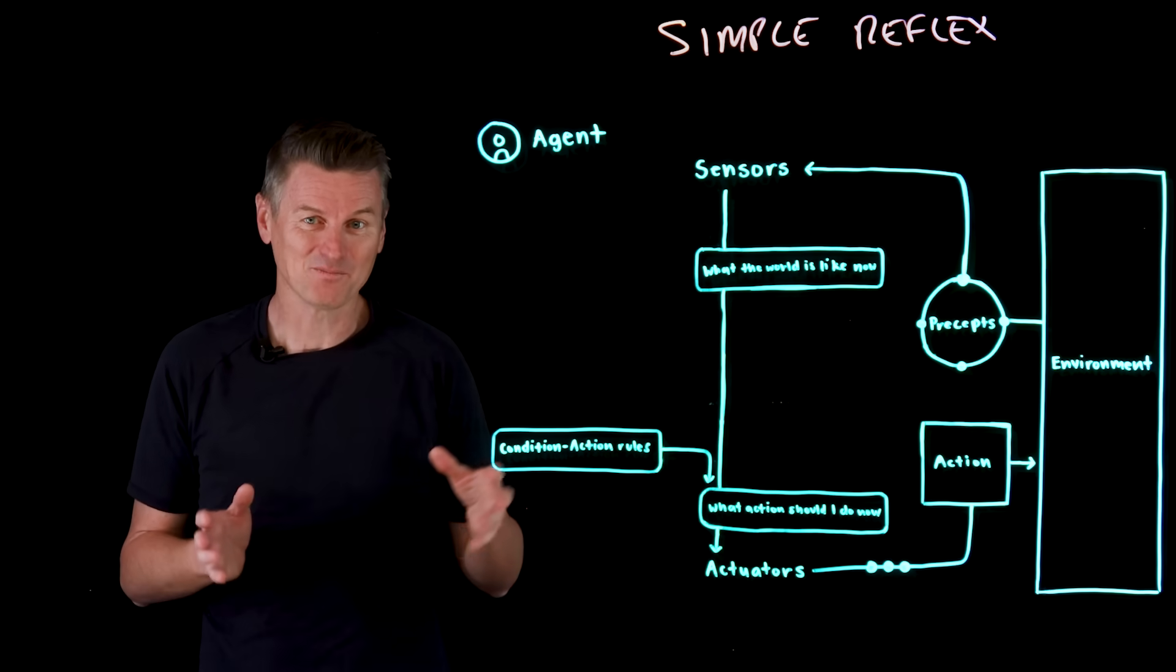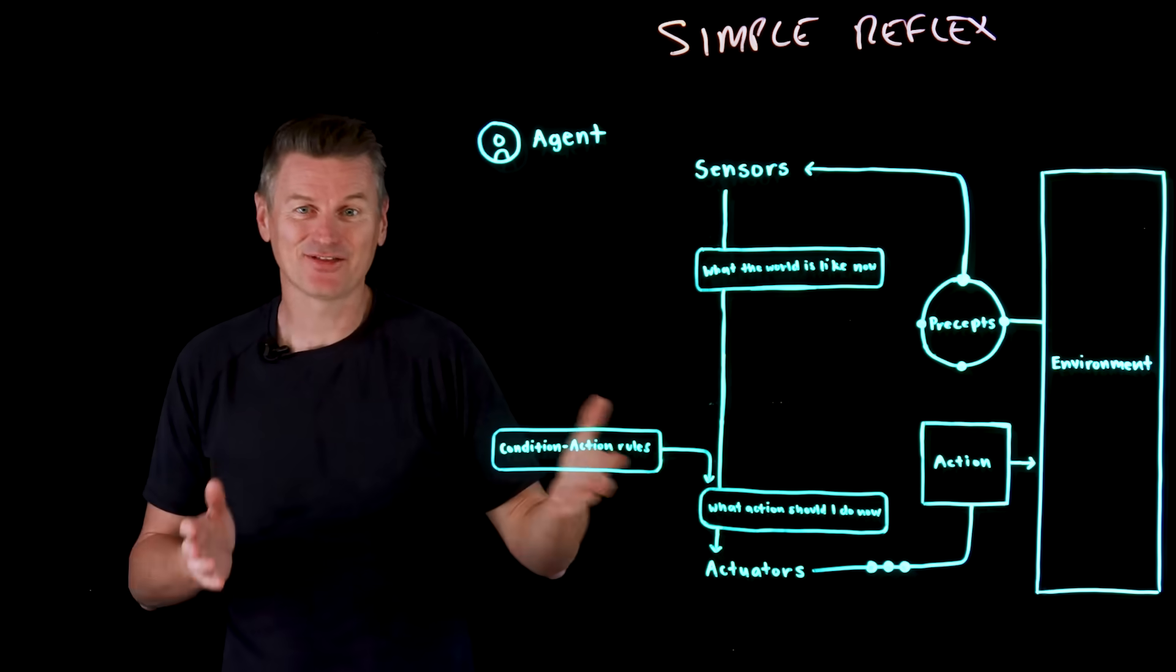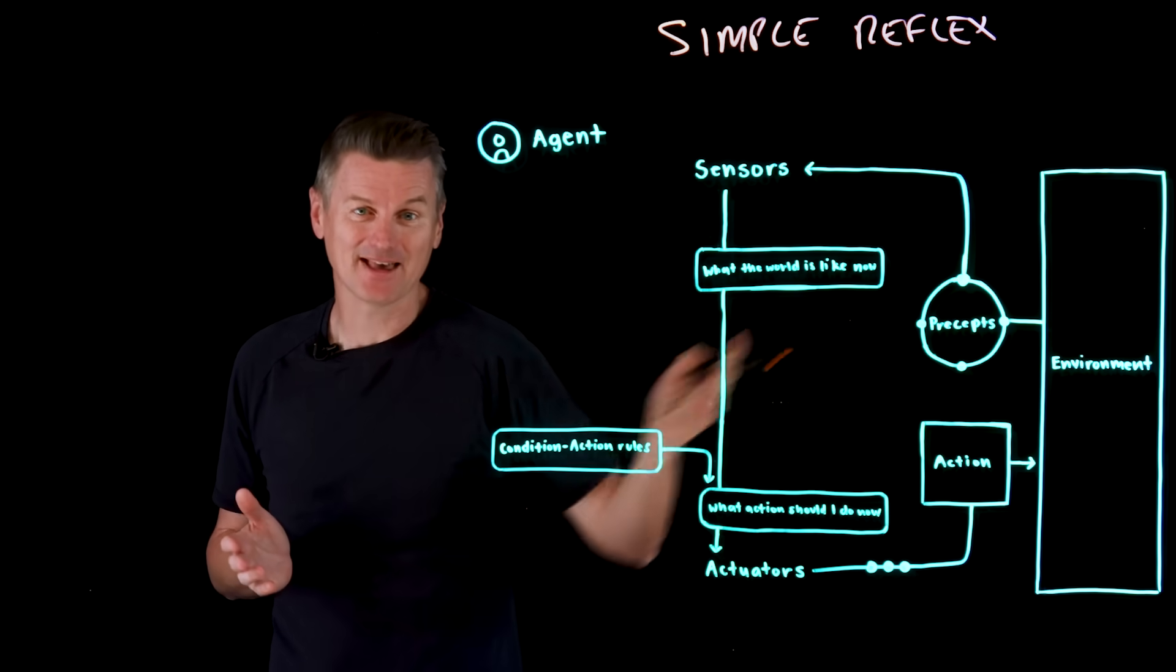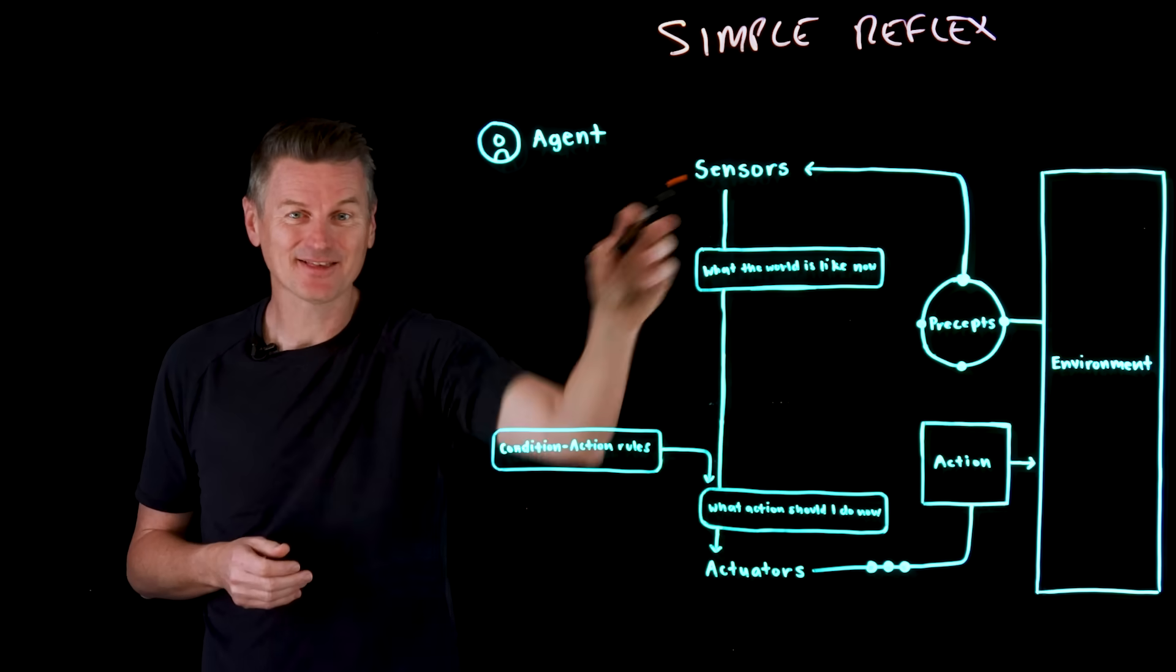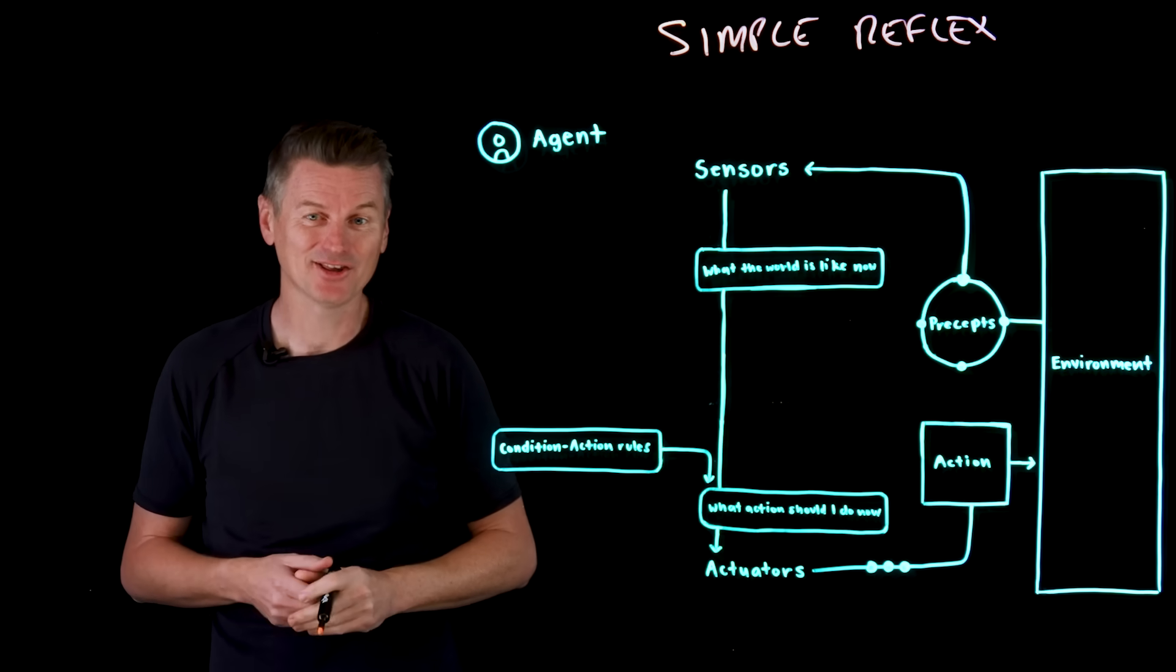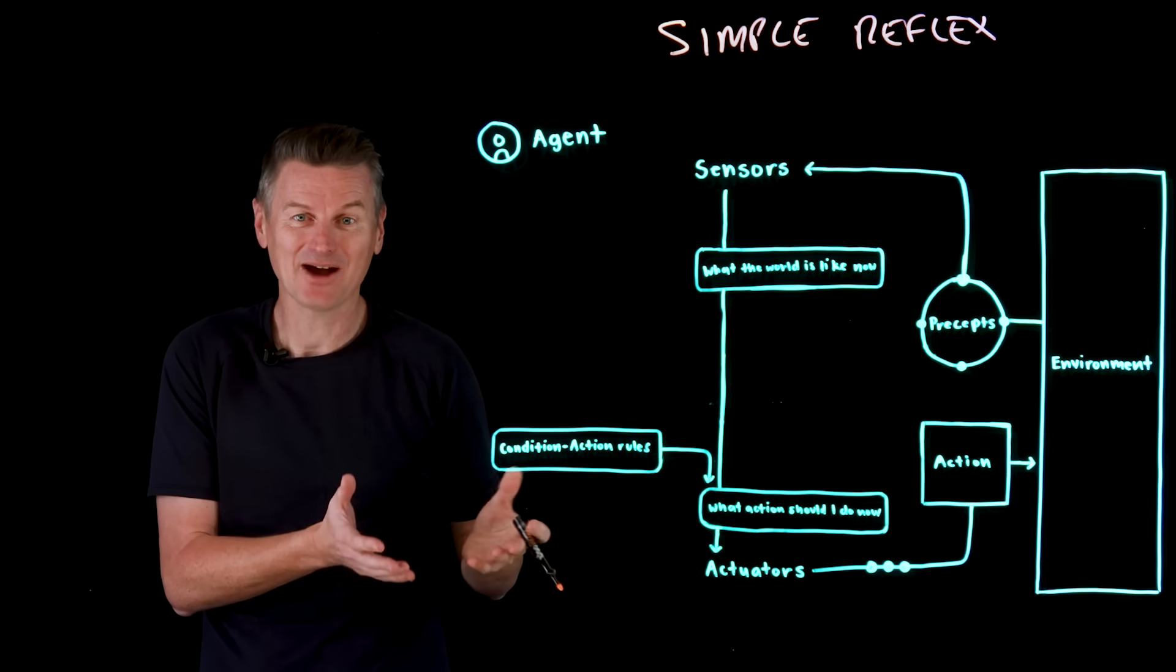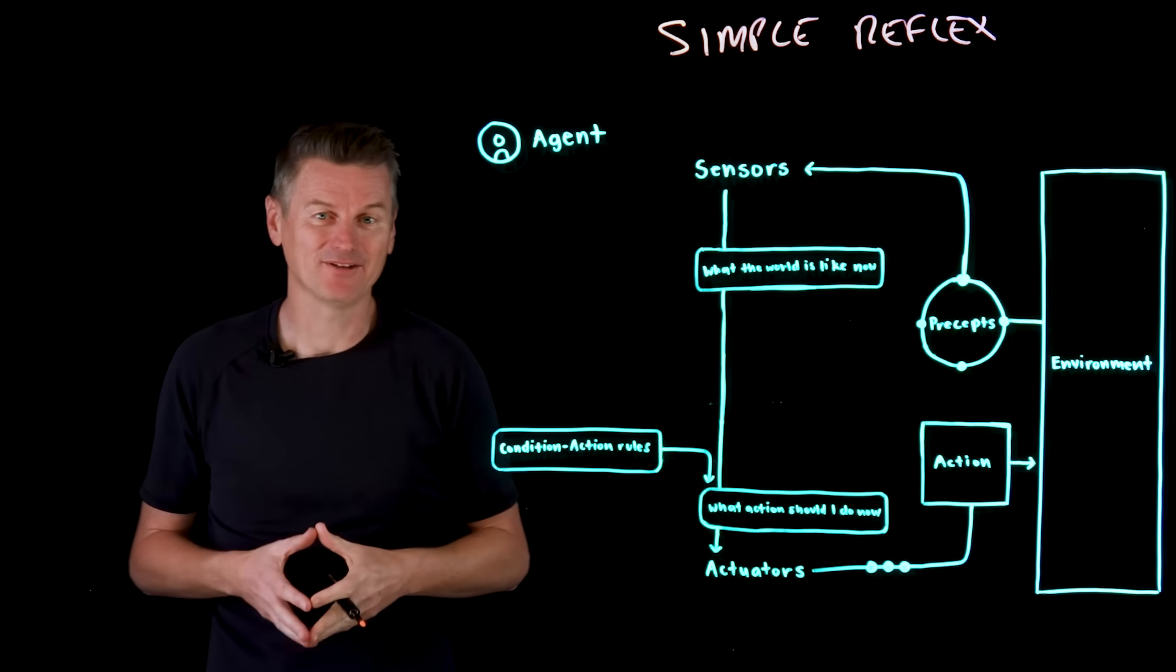So let's break it down. We've got our agent here. The environment over here, that's the external world that the agent is embedded into and it reacts to. Then we've got percepts. These are the perceived input from the environment as measured through sensors. Then these sensors feed the percepts into the internal logic of the agent, which gives us a representation of what the world is like now. And knowing what the world is like now, we can use condition action rules as the core logic of the simple reflex agent.